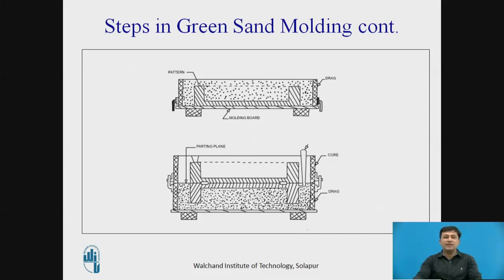Please see this figure showing the green sand process. First, where the pattern is placed, the different elements: the cope half is the upper part, the drag half is the lower part where sand is rammed. Clamping is done between cope half and drag half. The parting line is the line at which the cope half and drag half are separated — where two parts are removed or clamped together.